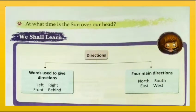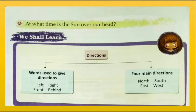Let's have the question for the picture story: At what time is the sun over our head? At 12 o'clock in the afternoon, the sun is over our head. What we are going to learn in this chapter: we shall learn about directions, words used to give directions — left, right, front, and behind — and the four main directions: north, south, east, and west.